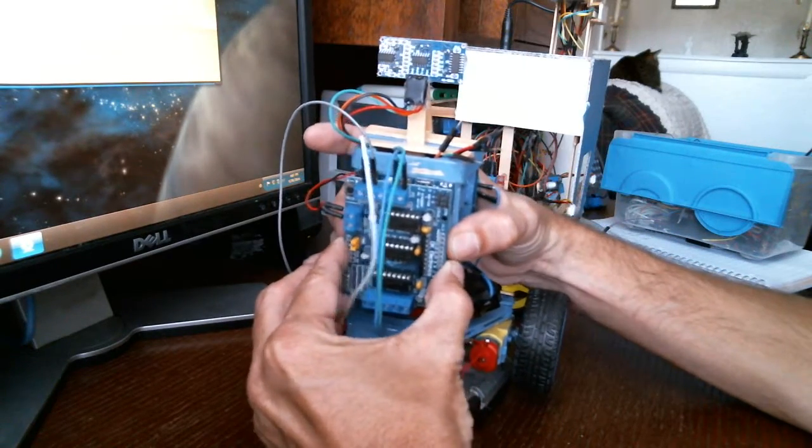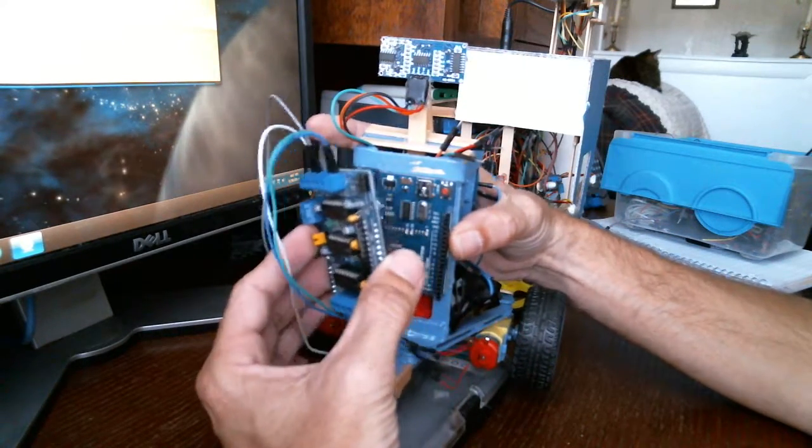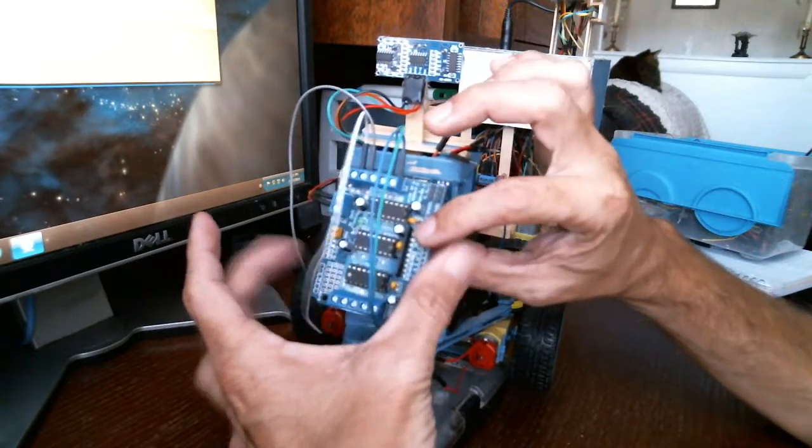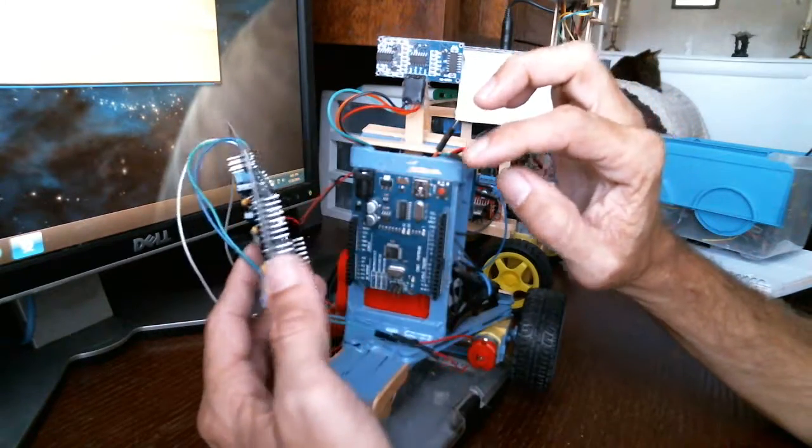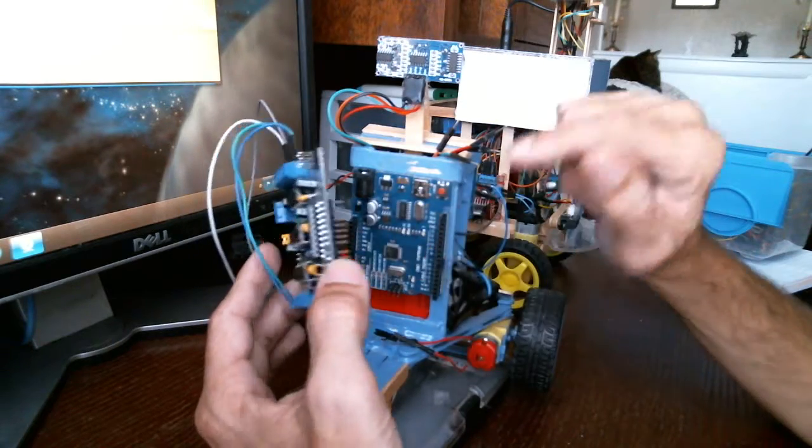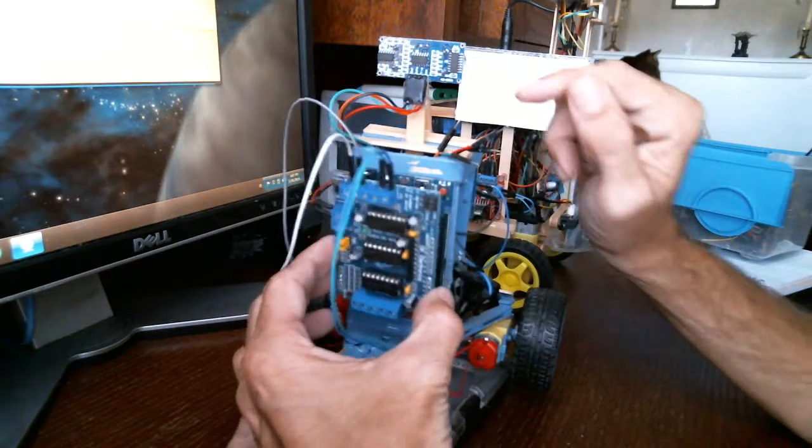Now you can see here this is just an Arduino shield which is a motor controller, gives you four channels and plugs right on to an Uno.